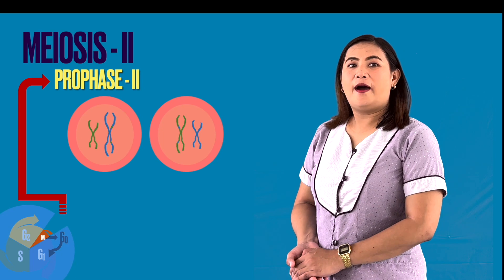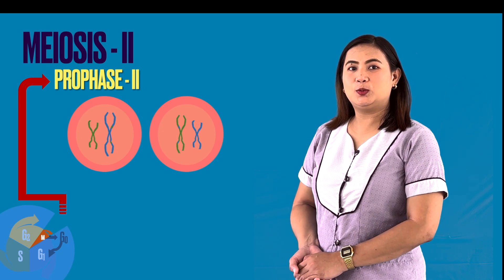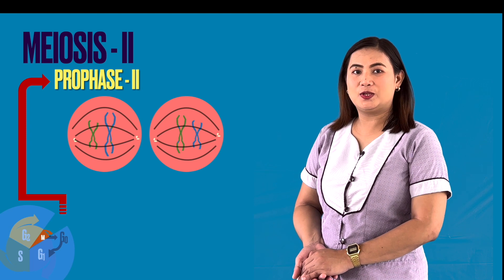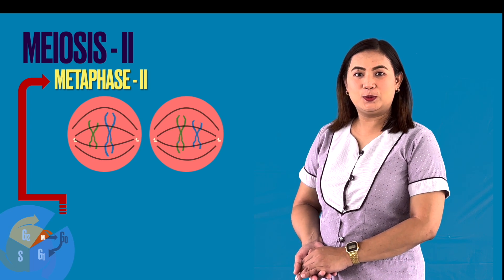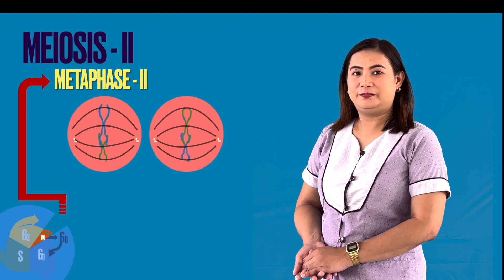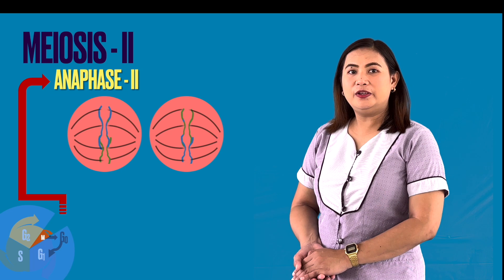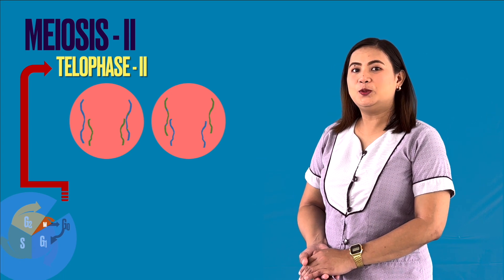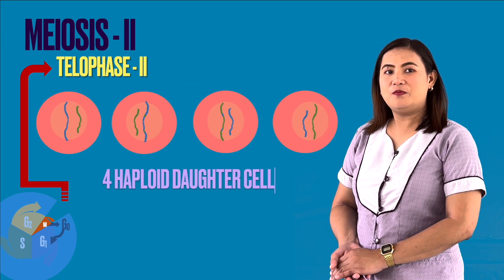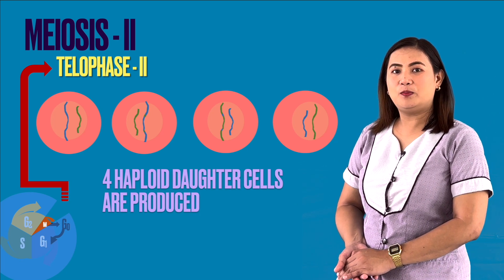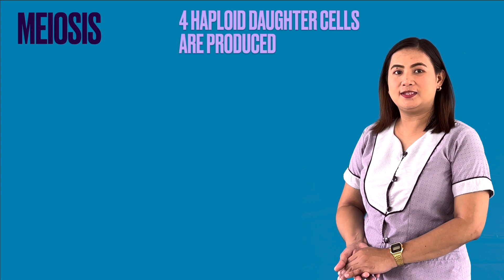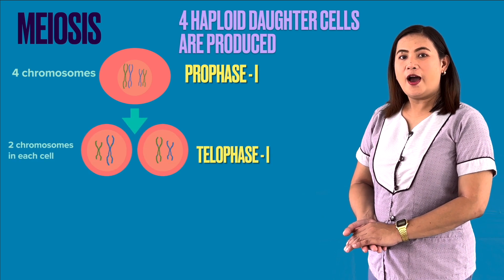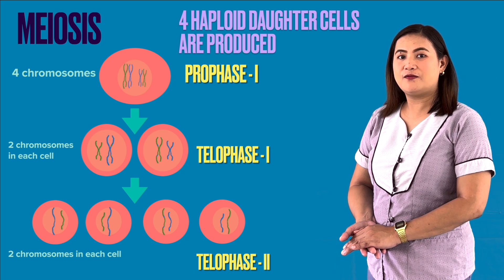After meiosis 1, the two daughter cells proceed to meiosis 2 with the following stages: prophase 2, where a new spindle fiber forms around the chromosomes; metaphase 2, where chromosomes line up at the equator; anaphase 2, where centromeres divide and chromatids move to opposite poles; and telophase 2, where the nuclear envelope forms around each set of chromosomes and the cytoplasm divides through cytokinesis. After the whole process of meiosis, four haploid cells are produced which are unique sex cells for reproduction.